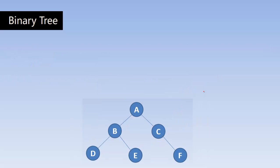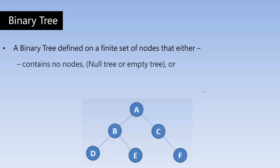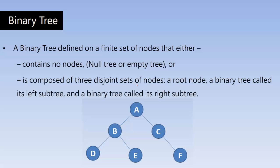We can also define the binary tree as a tree that contains no node. A null tree or empty tree can also be called a binary tree, because a node without any children is also considered as a binary tree. The basic definition is a node can have zero children, one child, or a maximum of two children. That is the basic definition of binary tree.